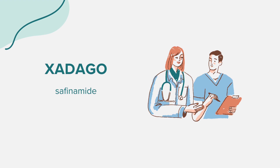Xadago, or safinamide, belongs to the drug class of dopaminergic anti-Parkinsonism agents. It functions as a monoamine oxidase inhibitor type B (MAOB), enhancing the duration of dopamine activity in the brain. Dopamine deficiencies in the brain are linked to Parkinson's disease.